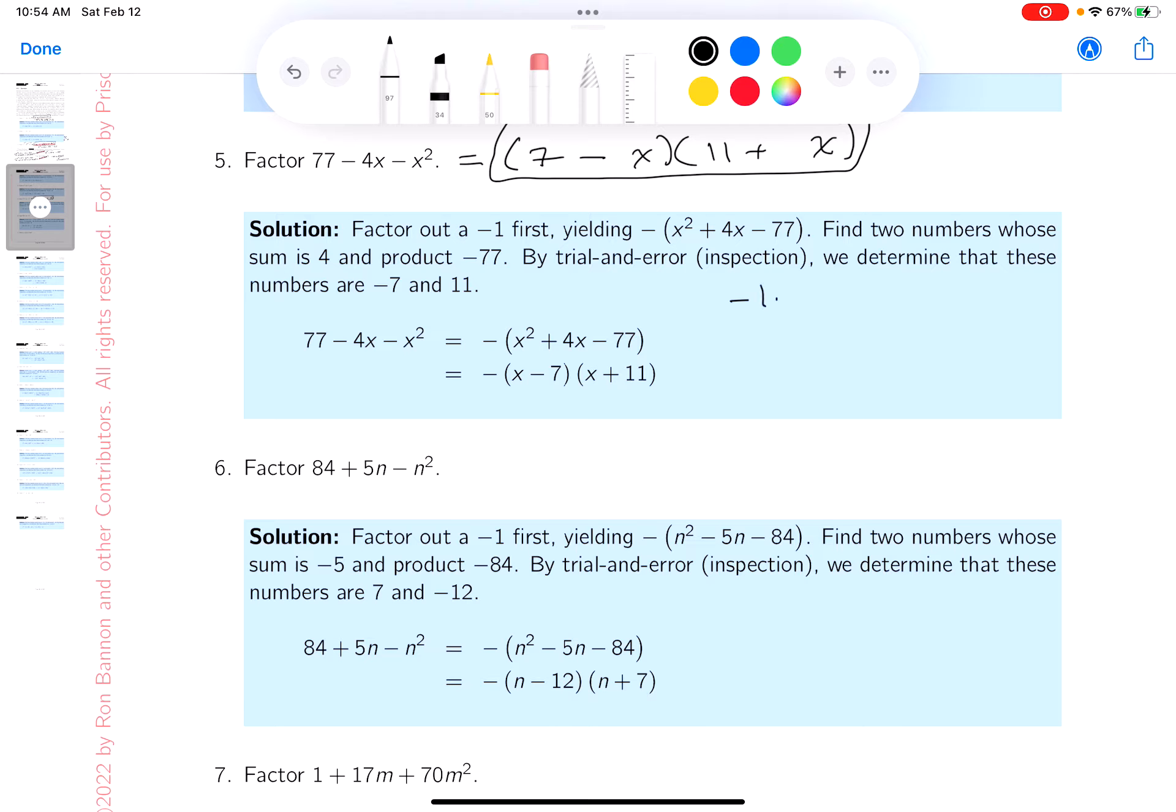What some people do, believe it or not, is they try to write them so they always look the same - that is, the x squared's in front with a positive coefficient. So what they do is they factor out a minus 1, and what do they get? x squared plus 4x minus 77. That's the same thing that's written over here.